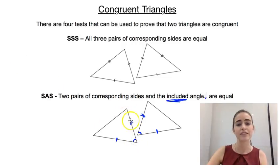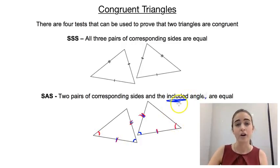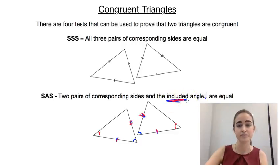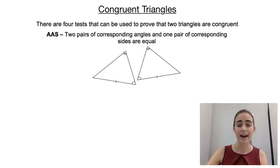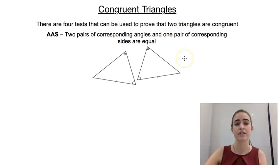For example, if this side equals this side, and this side equals this side, but the angle is not the included angle — that doesn't prove that they're congruent. It only works if it's that included angle. Our third test is called the AAS test — angle, angle, side — which means we have two pairs of corresponding angles equal and one pair of corresponding sides equal.